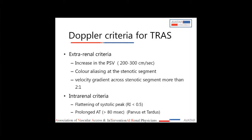For intra-renal waveform analysis, angle the probe parallel to the interlobar artery with an angle of insonation not more than 60 degrees. Look at peak systolic velocity and end diastolic velocity to calculate the resistive index using the formula: (PSV − EDV) / PSV. A resistive index below 0.5 is suggestive of renal artery stenosis. You also measure acceleration time — from onset to peak of the systolic upstroke — if more than 80 milliseconds, it is called the parvus et tardus pattern, also suggestive of TRAS.